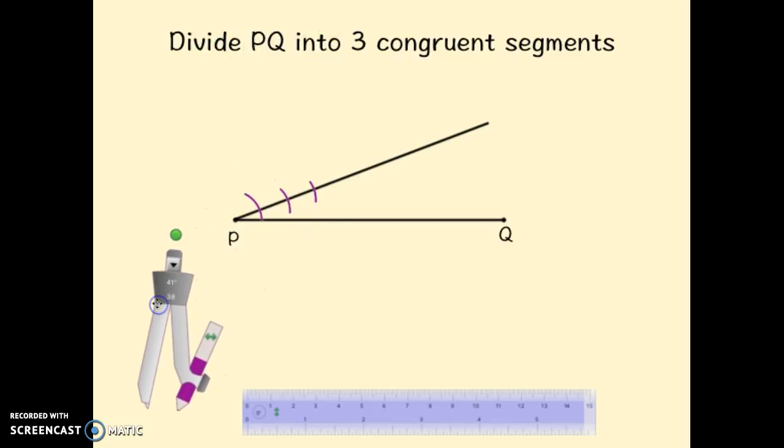So I've now taken this segment that I drew, and I've made three arcs along it because I want to divide this into three segments. So our next step is going to figure out how far P and Q are from our furthest mark.